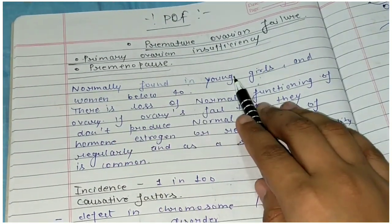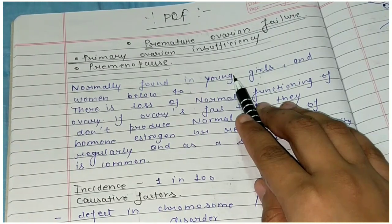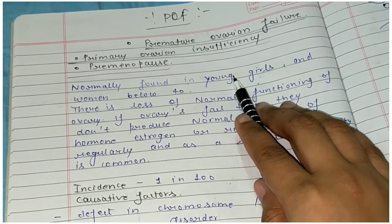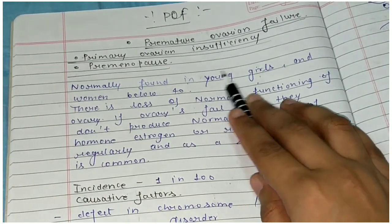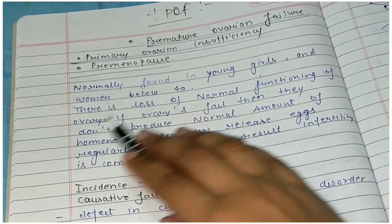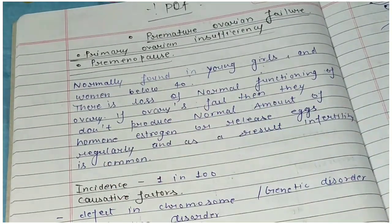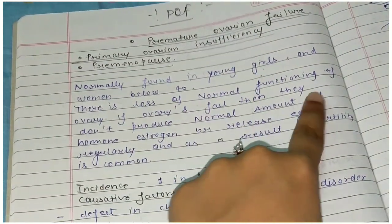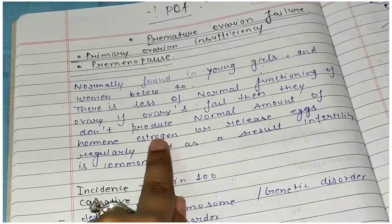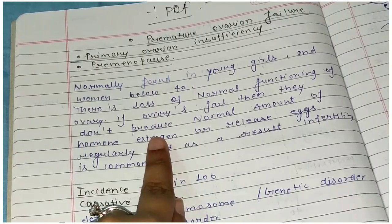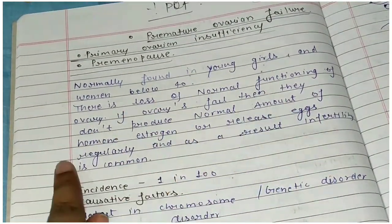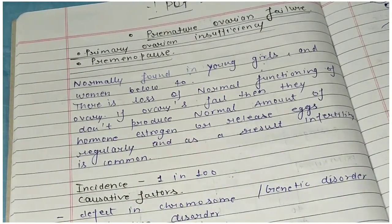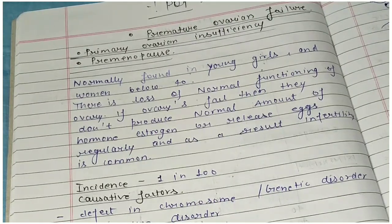POF is normally found in young girls and women below 40 years. There is a loss of normal functioning of the ovary. What happens is that the ovary has a normal function loss of the hormone estrogen — if ovaries fail, they do not produce a normal amount of estrogen and will not release eggs regularly, which leads to infertility.